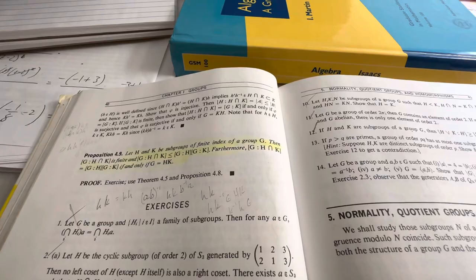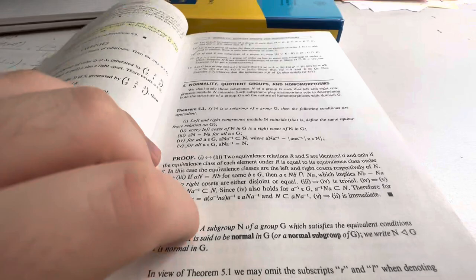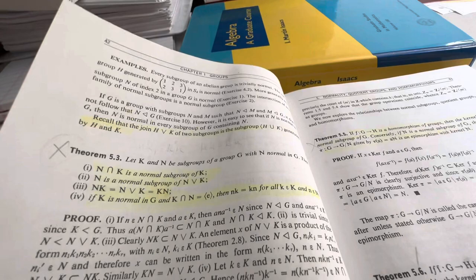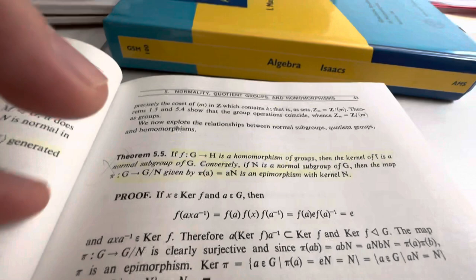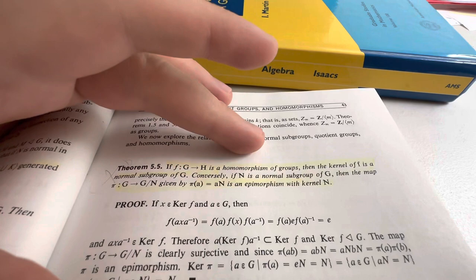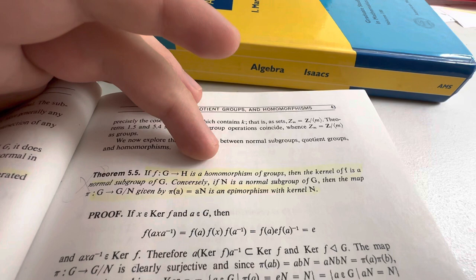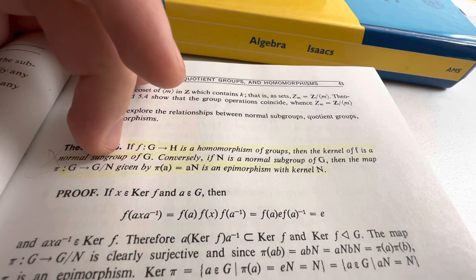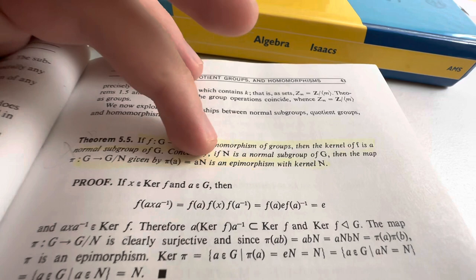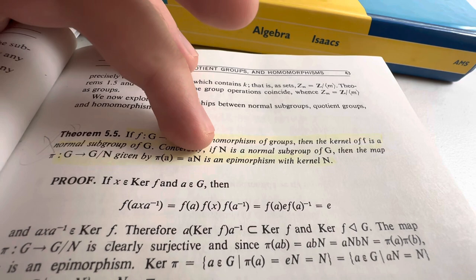So we can look at some group theory. Let's go for a theorem. How about that? We go for a big theorem. Normal subgroups. How about this guy? If F is a homomorphism—I almost wanted to say homeomorphism. Too much analysis. It is a homomorphism from G to H and their groups. Then the kernel of F is a normal subgroup of G. Conversely, if N is a normal subgroup of G, then the map pi from G to the quotient group, G factor N, given by the projection map, so you just get the coset AN. Is an epimorphism with kernel N. And it's a pretty short proof.